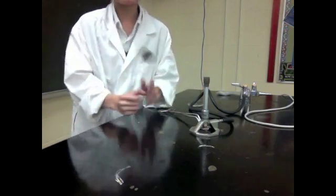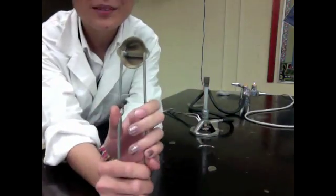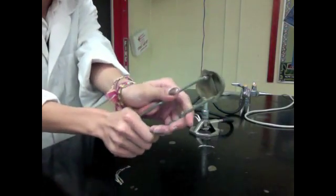You're also going to need a flint, which looks like this. And it's basically a spark. And this is used to light the Bunsen burner.